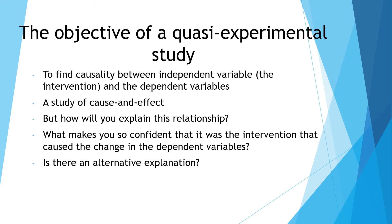The purpose of any quasi-experimental research is always to find a causality between dependent variables and the independent variables. But the question is how confident are you in your intervention? Can you explain the reasons for the change in dependent variables? Is there any alternative explanation in the change of the dependent variable? Is it really due to the intervention that you designed?